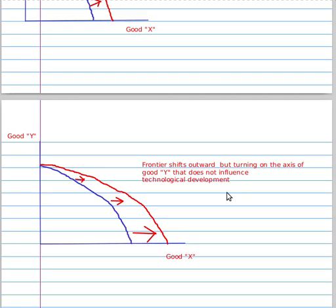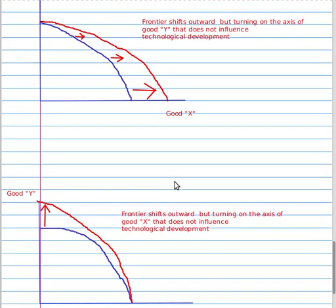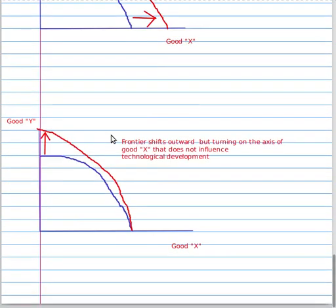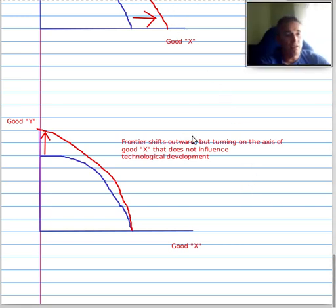Finally, if the development of technology is only for Good Y, or it occurs only in that good (Image C), the frontier shifts outward but pivots from the axis of Good X, which does not experience technological development.